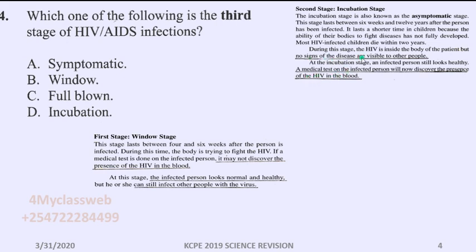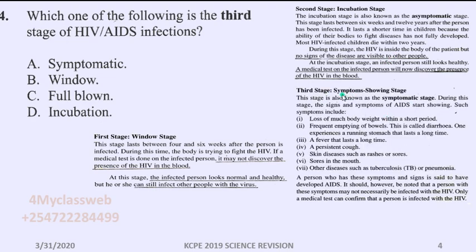Looking at the third stage, which we call the symptomatic stage — during this stage the signs and symptoms of AIDS start showing. Such symptoms include: loss of much body weight within a short period, frequent emptying of the bowel which is also called diarrhea, a running stomach that lasts a long time, fever that can last a long time, and persistent cough.